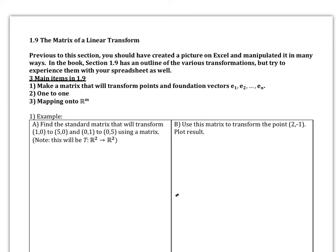This is Linear Algebra 1.9, The Matrix of a Linear Transform. In previous sections, you should have created a picture on Excel and manipulated it in many ways with a transformational matrix. Section 1.9 has an outline of the various transformations, but try to experience them with your spreadsheet as well. There are three main ideas in this section: making a matrix that transforms points, learning about the foundational vectors E1, E2 up to En — which are just the columns of your identity matrix — and one-to-one and mapping onto Rm.